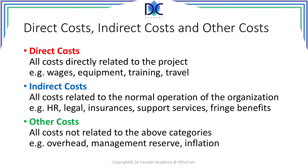When equipment, training, and travel are used for other projects, then they don't belong in the direct costs. Indirect costs relate to all the costs that are incurred due to the normal operation of the organization. It relates to human resources, legal issues, insurances, support, and fringe benefits.